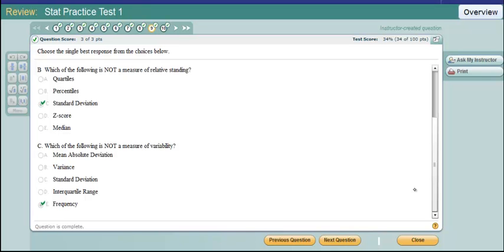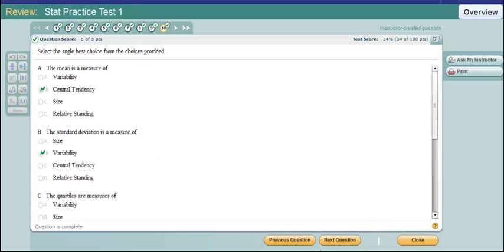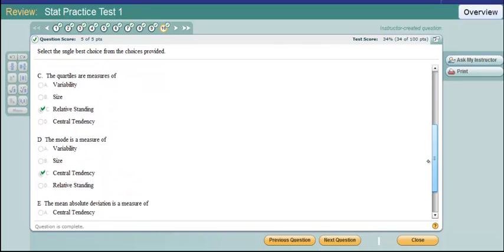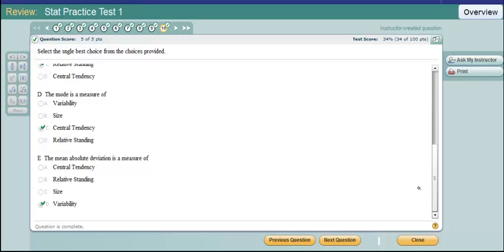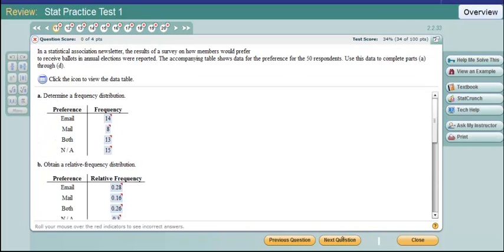Mean, absolute deviation, variation, standard deviation, interquartile range are all measures of variability. The mean is a measure of central tendency. The standard deviation is a measure of variability. Quartiles are measures of relative standing. And the mode is a measure of central tendency. The mean absolute deviation is a measure of variability.